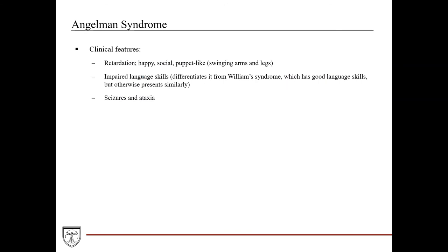Specifically, these patients exhibit mental retardation. Their demeanor is characterized as happy, social, and puppet-like, with swinging arms and legs. They have impaired language skills, which differentiates Angelman syndrome from Williams syndrome — Williams syndrome patients actually have good language skills but otherwise present similarly with mental retardation and this type of demeanor. Angelman syndrome patients also have seizures and ataxia, again reflecting the neurodevelopmental involvement.